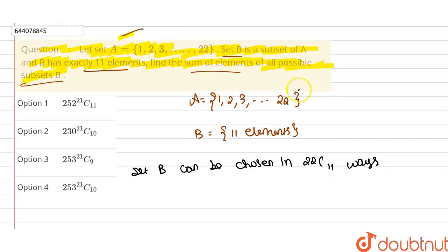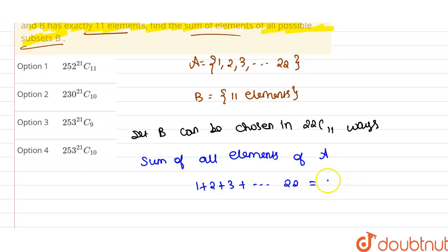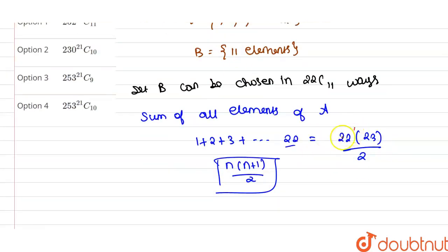The sum of all elements of A, that is 1 + 2 + 3 + ... + 22, equals n(n+1)/2. Using this formula with n = 22: 22 × 23 / 2. Simplifying, we cancel to get 11 × 23 = 253. So 253 is the sum of all elements of A.